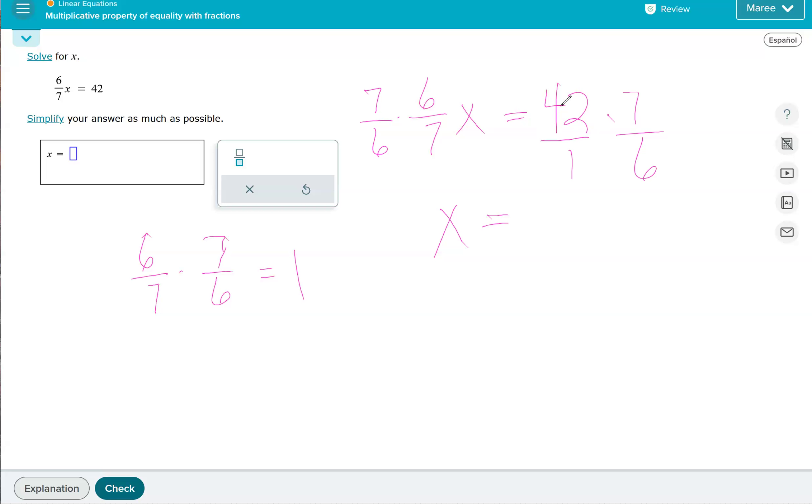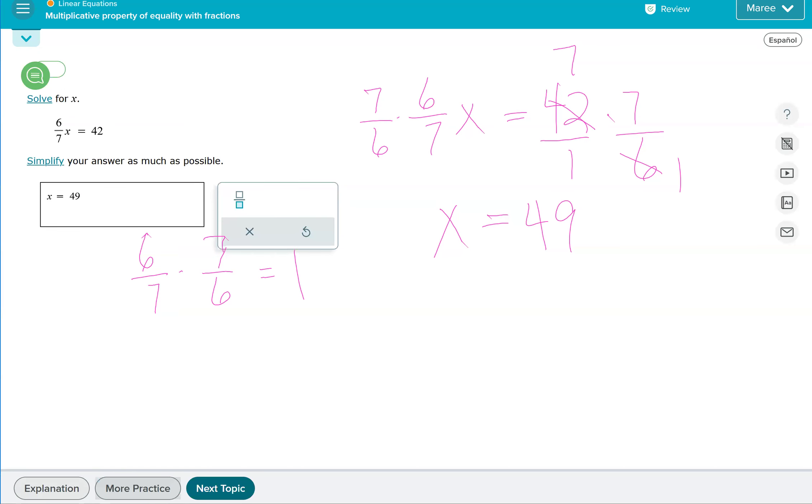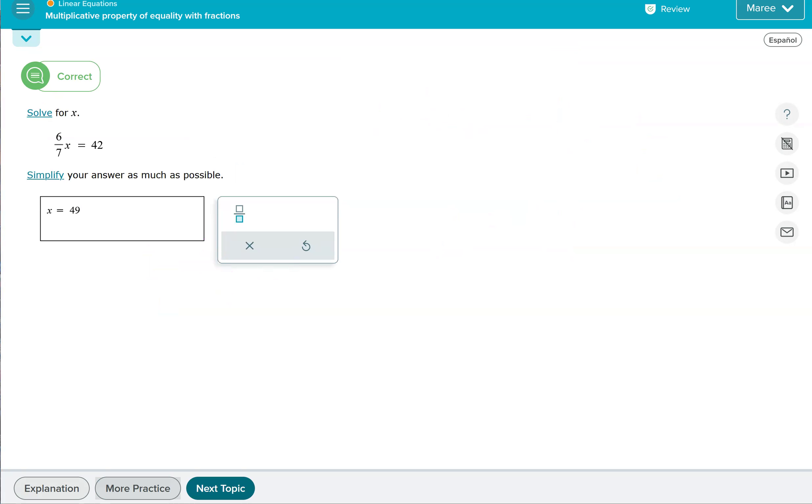So we're going to do 42 times 7, and then we're going to divide by 6. If you can divide 42 by 6 first, that's going to be really helpful, which you can. 6 goes into 42 seven times and into itself 1. In the denominator, we have 1 times 1, which is 1. Anytime we divide by 1, we just get what's in the numerator. So our answer is 49 or 7 times 7. Of course, you can always plug in the answer you get for the variable and see if it works, which it should if you do it correctly.